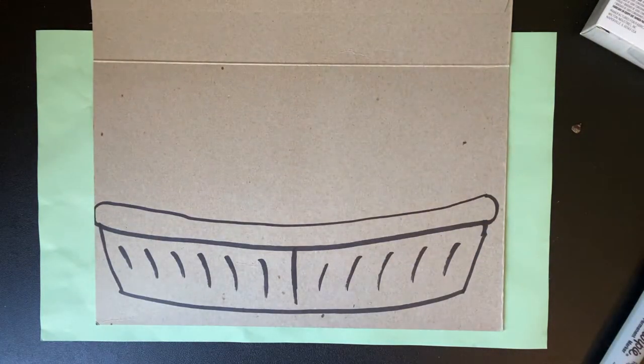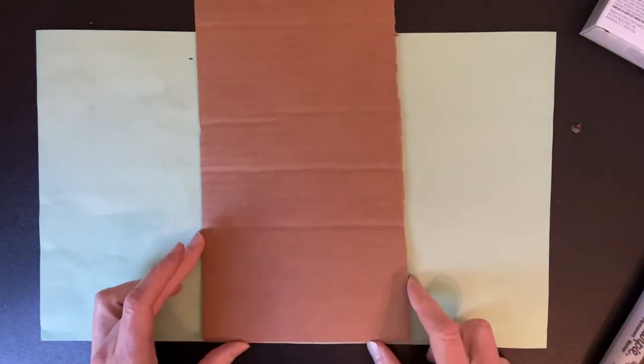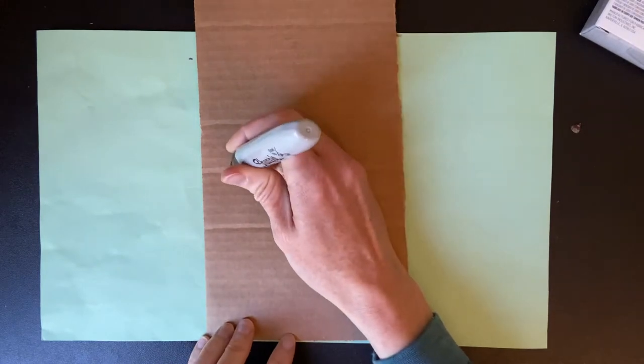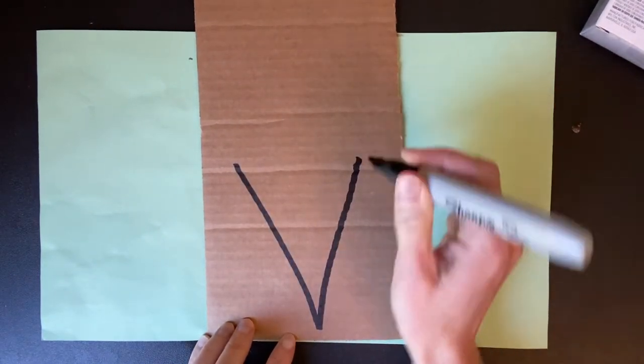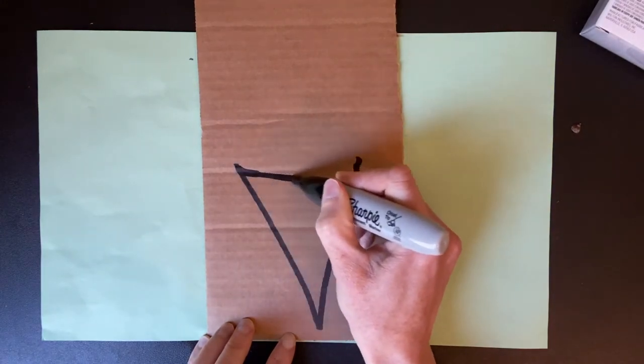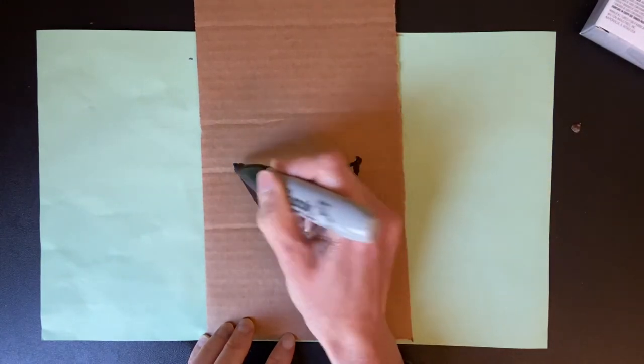The next thing I'm going to show you how to draw is the cone for the ice cream cone. So here's my cardboard. I'm going to, this is a long piece, so I'm going to scoot it up a bit. The ice cream cone is just a triangle like this with a curved top. It's not straight, it's curved.